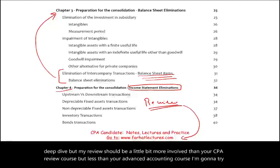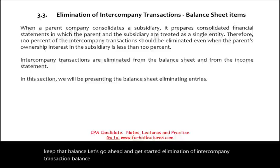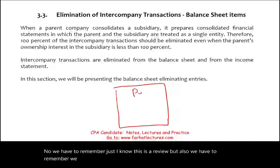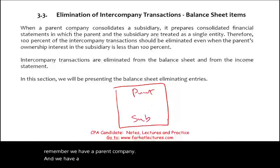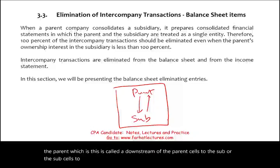So I'm going to try to keep that balance. Let's go ahead and get started. Elimination of intercompany transactions — balance sheet. We have to remember we have a parent company and we have a subsidiary. When the parent controls the sub, any transaction between the parent and the sub is called a downstream if the parent sells to the sub, or upstream if the sub sells to the parent. Those are intercompany transactions.